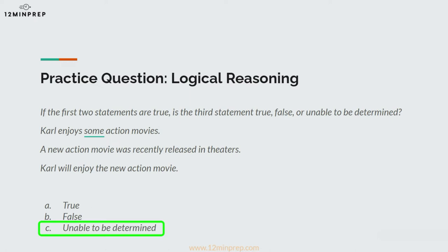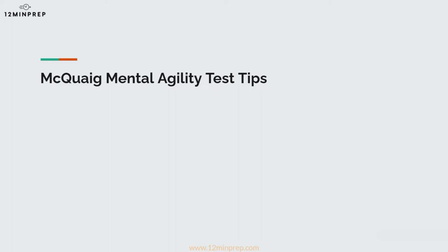Before taking the McCaig Mental Agility Test, there are a few things you should know. Here are three tips. First, you likely won't answer every question — and don't let that upset you. This is by design. With 50 questions and only 15 minutes, the test creators know that answering every question would be a rare feat. While you should try to answer as many questions as you can, don't feel too stressed out when you don't answer every single one.